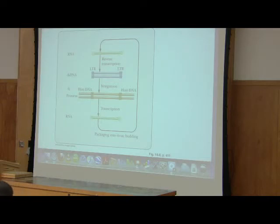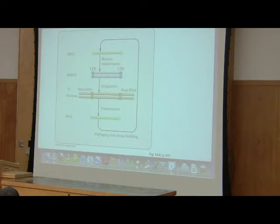One strategy for fighting HIV is to stop the replication. The problem is, you can stop all replication in the world and you're never going to get rid of the cells that already have the viral DNA. That's a real problem. So if you're looking for a cure for HIV, you've got to find a way to actually kill those cells.